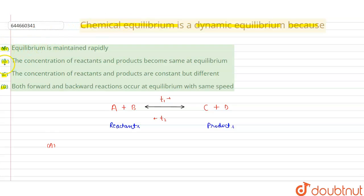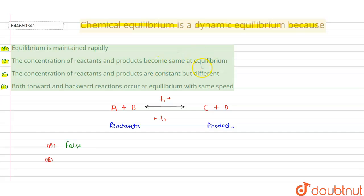Option B says: the concentration of reactants and products becomes the same. This is also a false statement. At equilibrium, the concentration doesn't become the same — it can be constant, but it is not necessarily equal. So option B is also false.